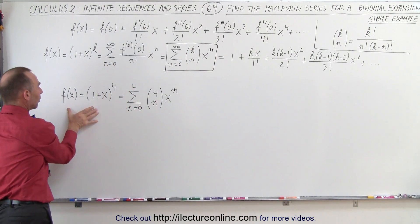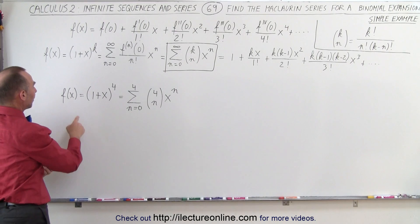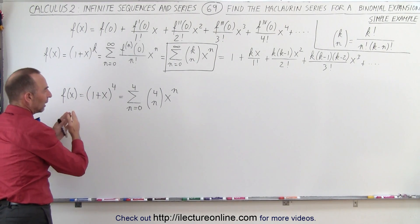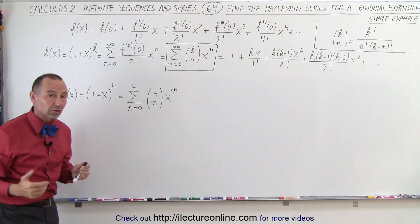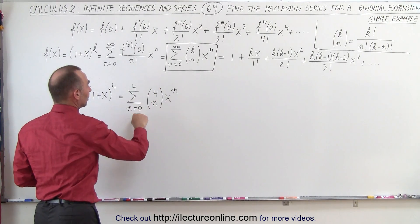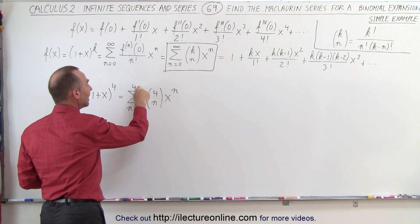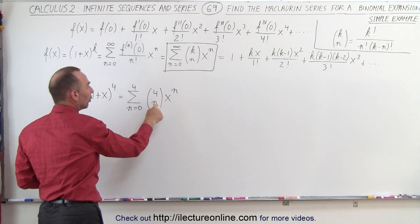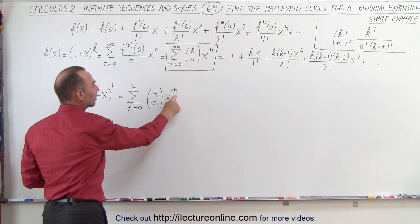So here is the example we're going to do. We're going to do a simple example. The function f(x) is equal to (1+x) raised to the 4th power, and we're going to write that as an expansion, a binomial expansion. And we're going to use this compact form here. n goes from 0 to k. In this case, k is 4. So the expression here becomes (4 over n) times x to the n power.